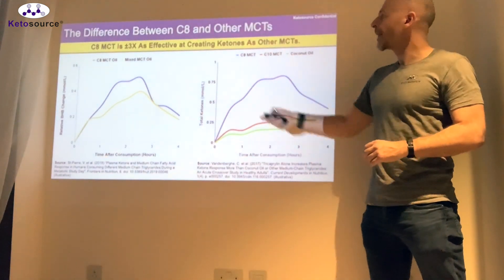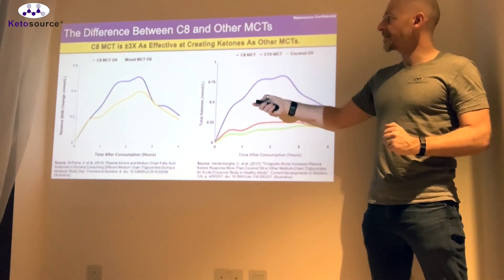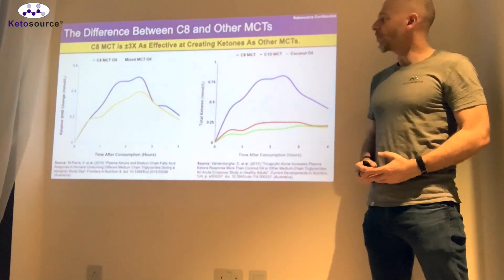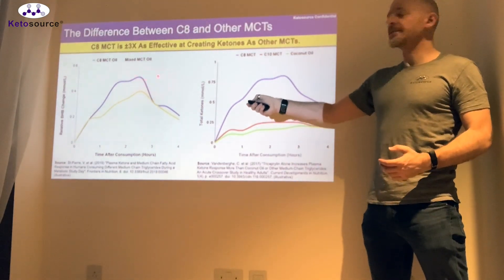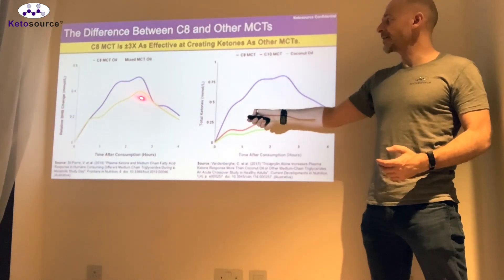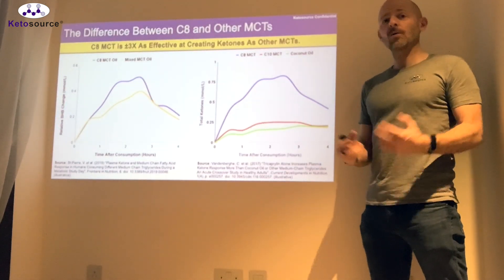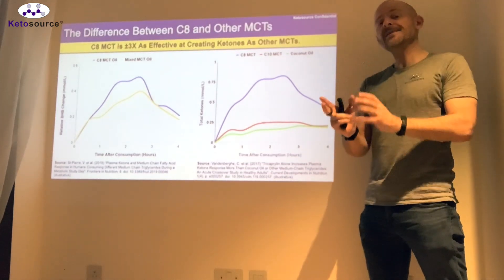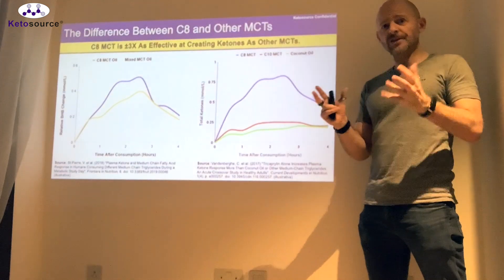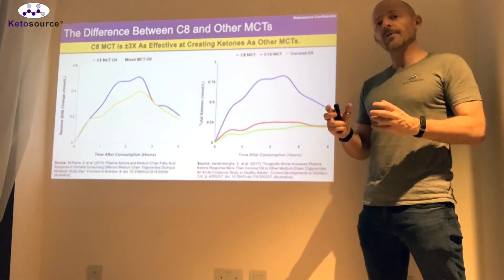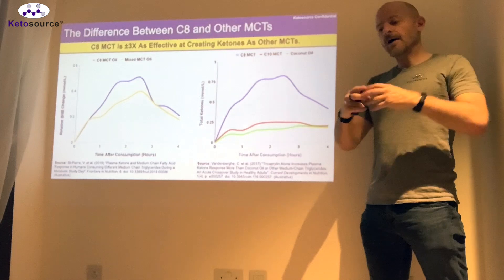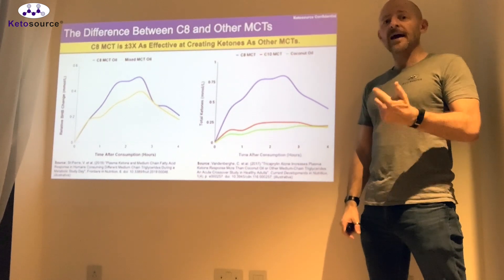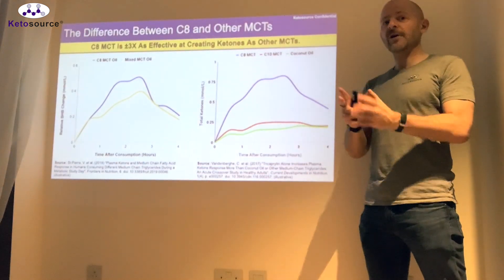Let's start with this chart from the 2019 study. This is looking at blood ketones on the axis of beta-hydroxybutyrate — this is what you track with your home meters. The purple line is C8 MCT and the yellow line is the mixed MCT oil. Mixed MCT oil — if you see a product in a shop marked simply 'MCT oil,' it is a mixed MCT oil, meaning it contains a mixture of different types of MCTs: medium-chain triglycerides, which would be C8, C10, and C12, typically in varying amounts.